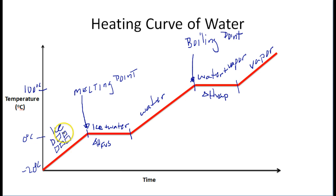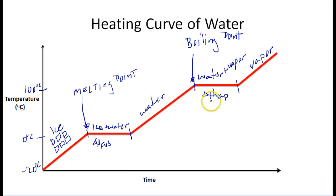This is your standard heating curve of water. You've got ice or the solid stage, then a melting point at 0 degrees Celsius where you have a combination of ice and water due to the heat of fusion. Once all the ice melts, the water increases in temperature until 100 degrees Celsius, where it begins to boil — no more temperature increase due to the heat of vaporization. All energy goes into converting water into water vapor until only water vapor remains.